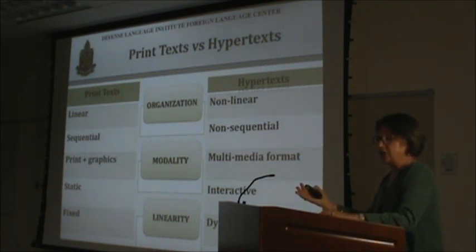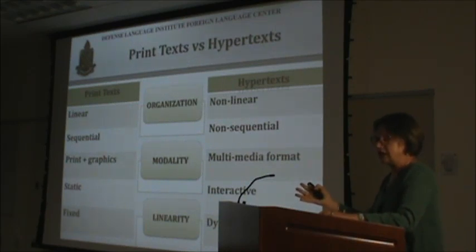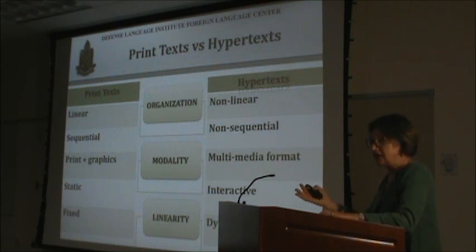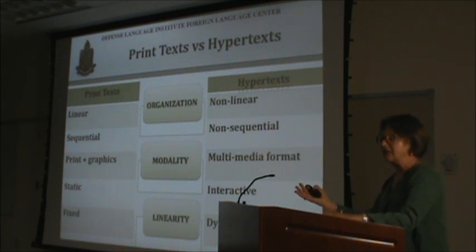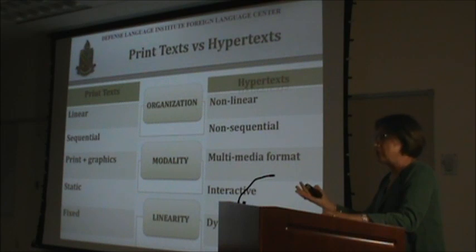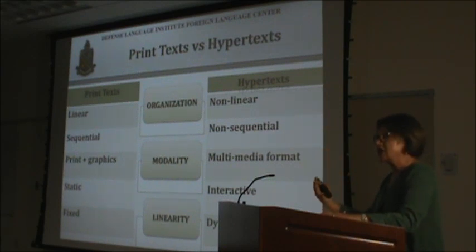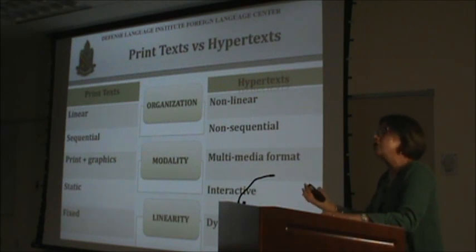Traditional text forms typically include a combination of print and two-dimensional graphics, while electronic texts can integrate a range of symbols, multiple media formats, icons, animated symbols, cartoons, and even virtual reality environments. Images and sounds are combined with written texts and create new ways of conveying meaning. Web-based environments are interactive by their very nature. As students navigate through various pathways, they construct a personal adaptation of the information, and in many cases a reader can become a writer by contributing to the web text.